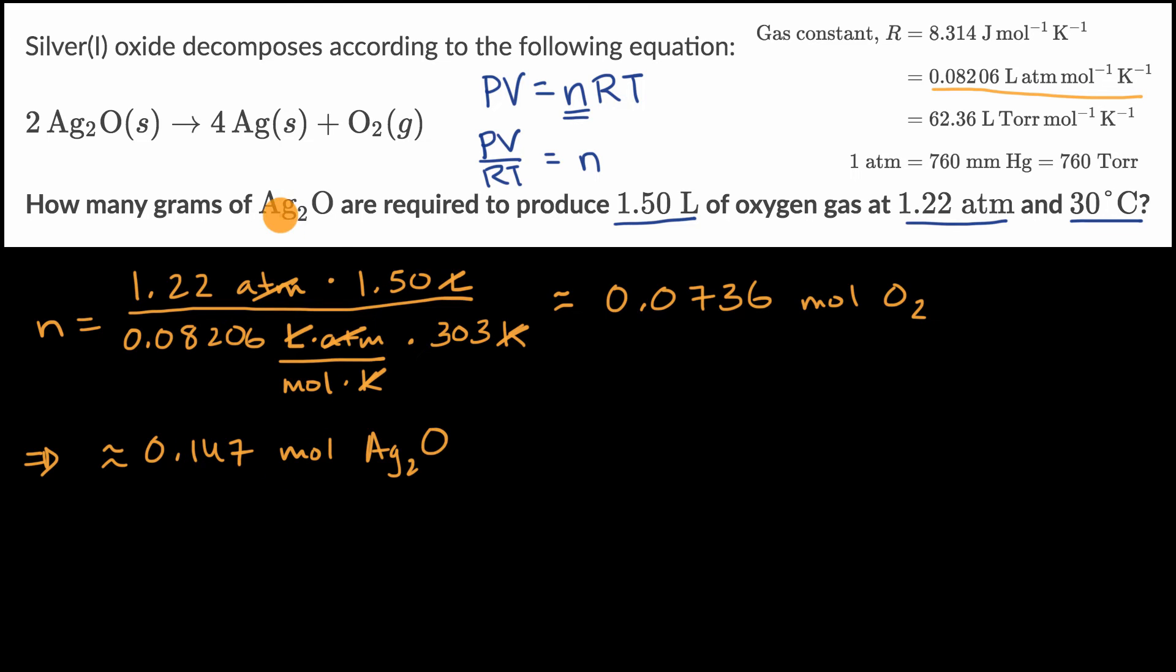But they're not asking how many moles, they're asking how many grams. So we multiply by the molar mass. The molar mass of silver oxide is the molar mass of silver times two, plus the molar mass of oxygen.